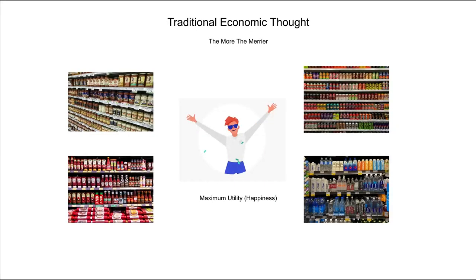Within traditional economic thought, a central idea was that more was always better. In fact, if you were not selling to a customer, it was because you just don't have the product they want. Naturally, this led to an explosion of micro product differentiation. These images from my local supermarket show just how far this has gone — even with water, there are over 25 different varieties on offer, ranging from different flavors to even acidity levels.